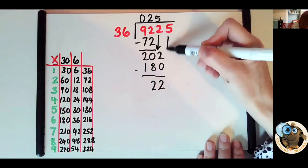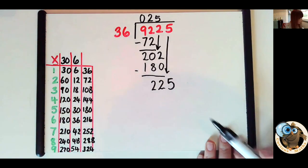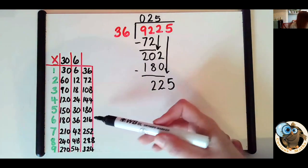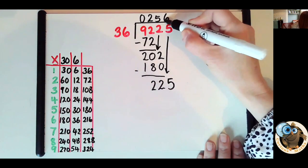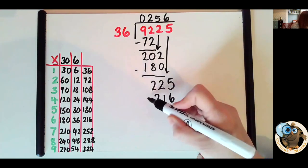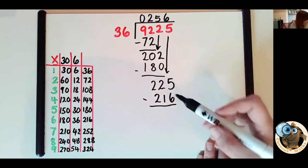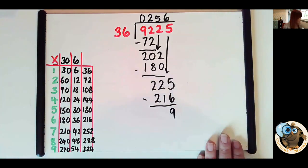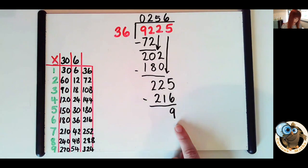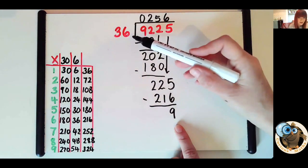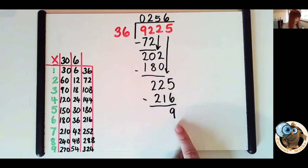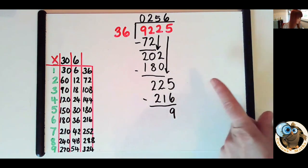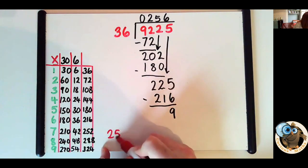So we bring our next number down. How many 36s in 225? We can see that six 36s are 216. So we write that down and we take it away. So 216 to 220 is 4 plus 5 more, we've got a difference of 9. So we haven't got any more numbers to bring down and our remainder is fewer than our divisor. So we can now start thinking of that as something that's left over. So as long as it's fewer than 36, we know we can't go any further.